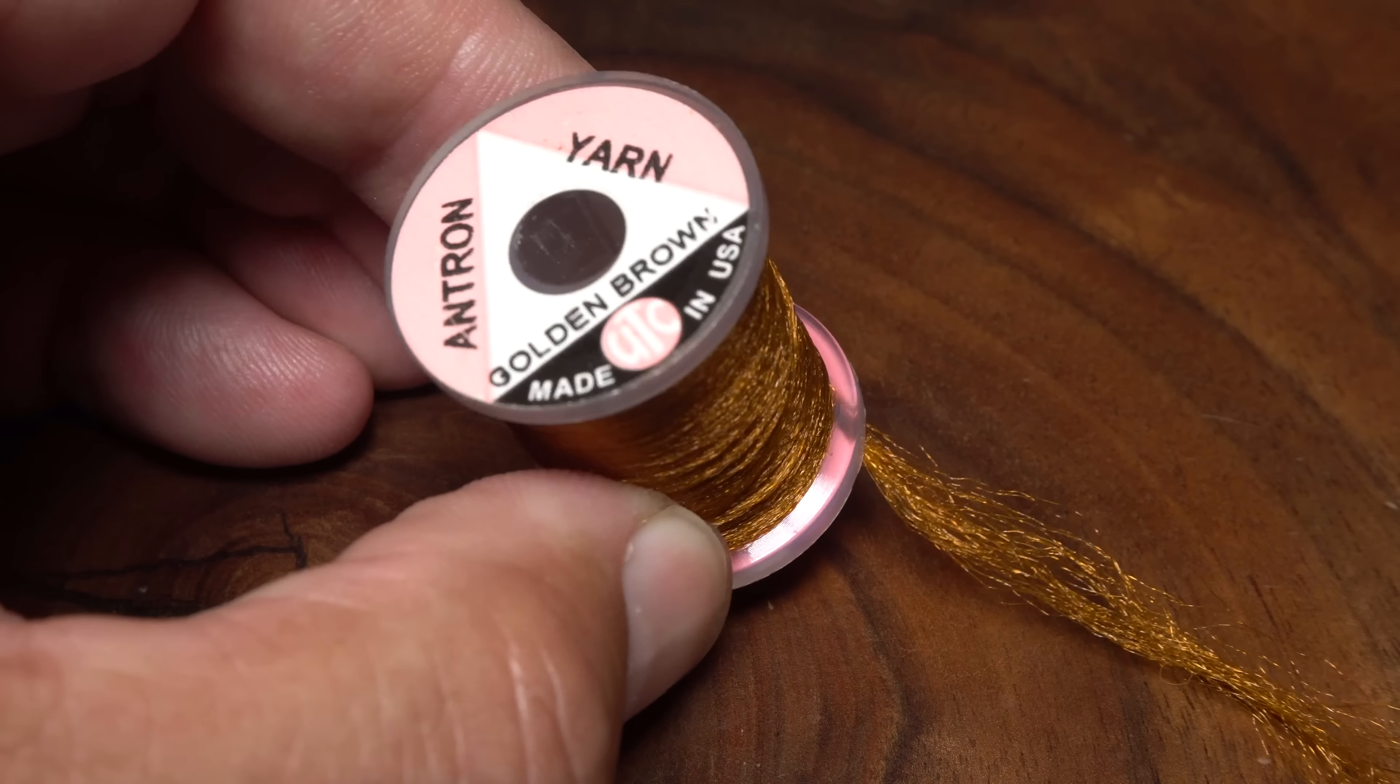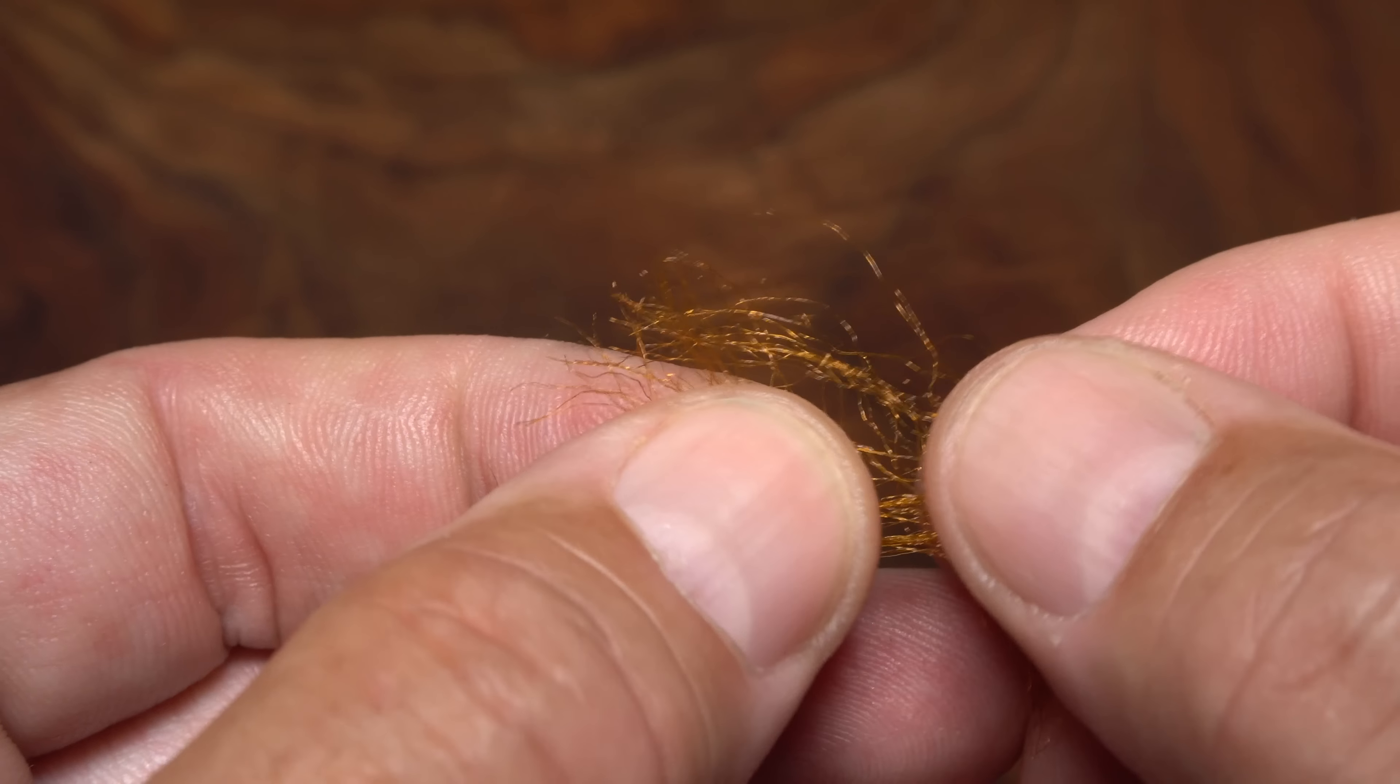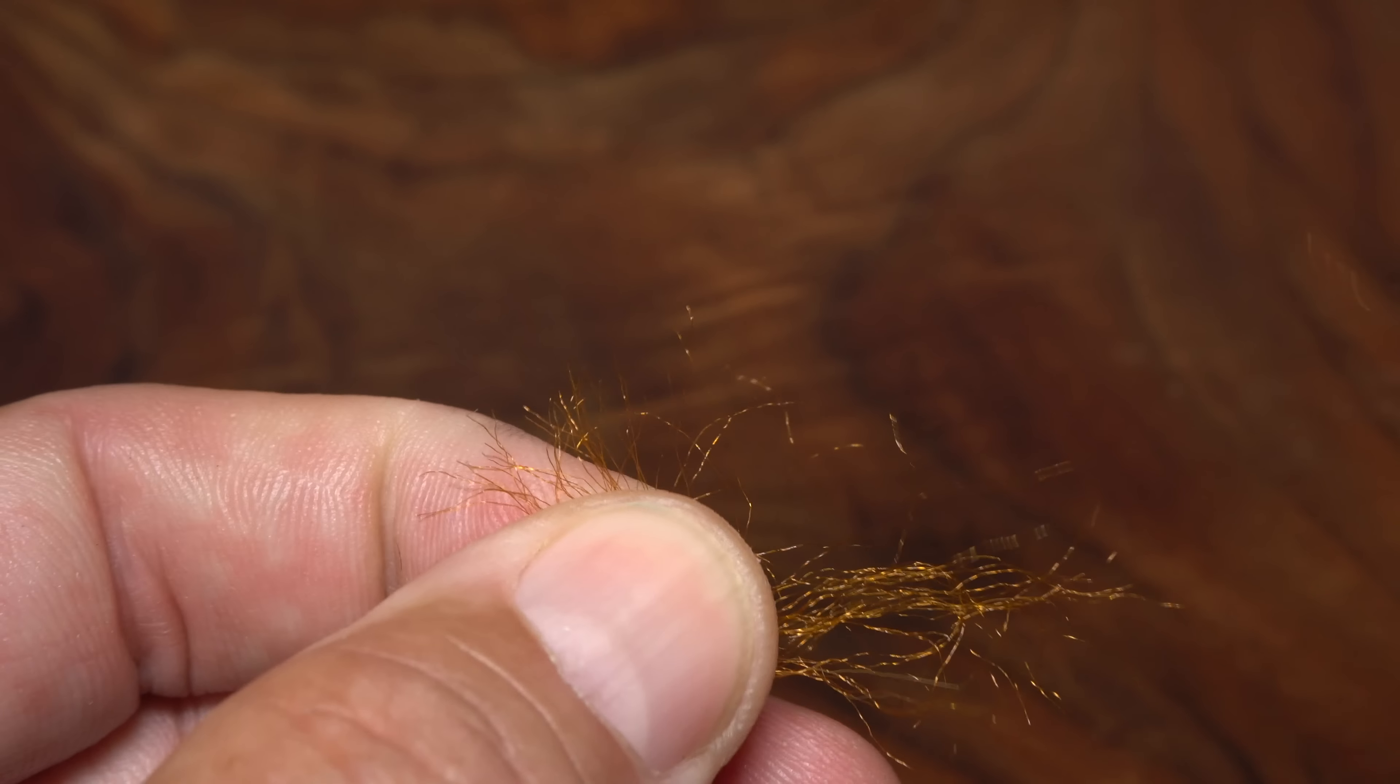Golden brown antron yarn is used to represent a partial trailing shuck. Snip a two inch segment free from the spool, then separate it in half lengthwise. Save one half in a safe place for use on the next fly.